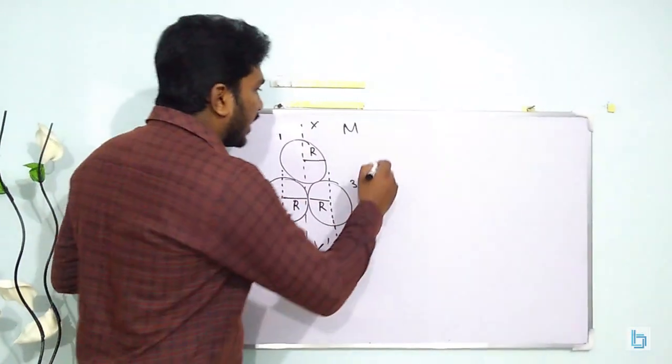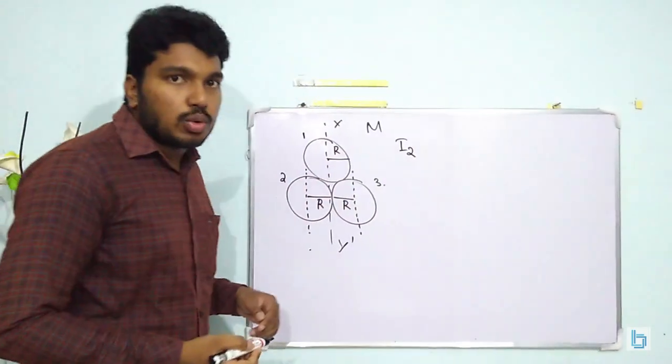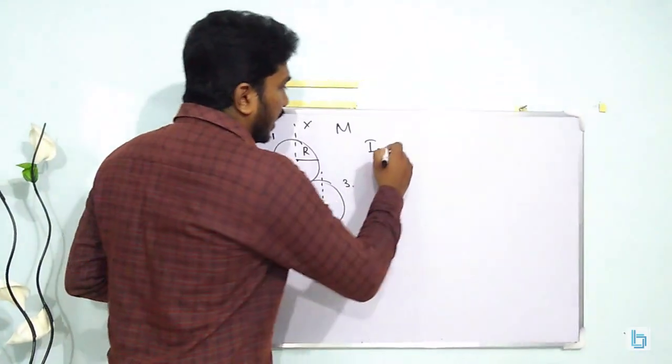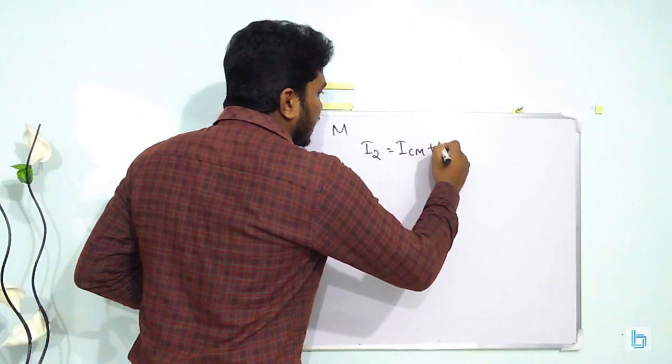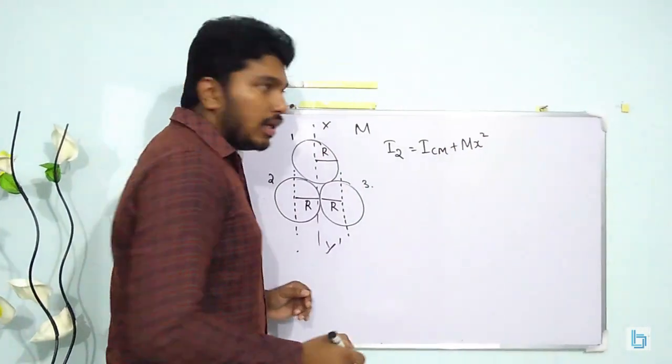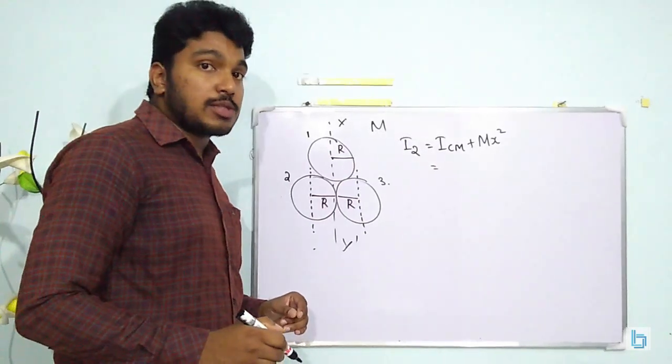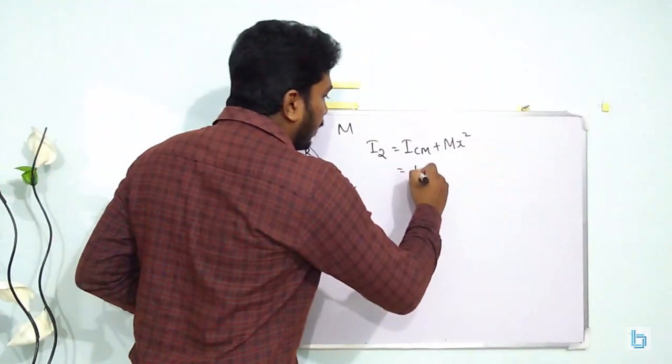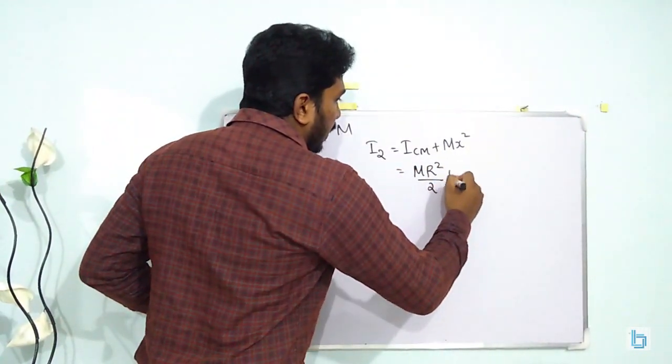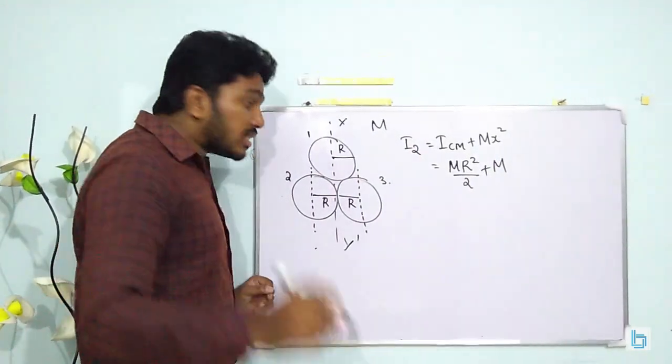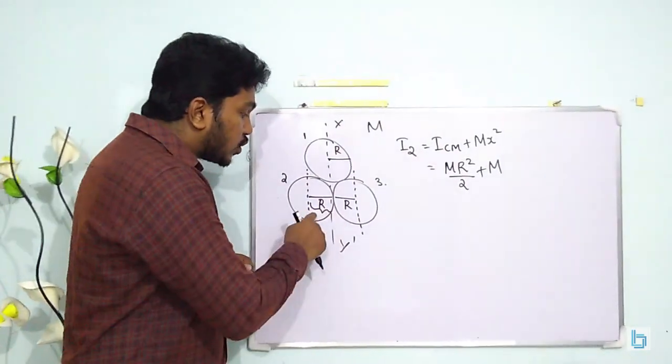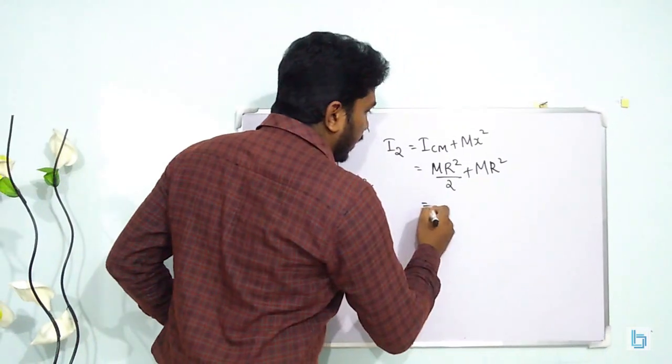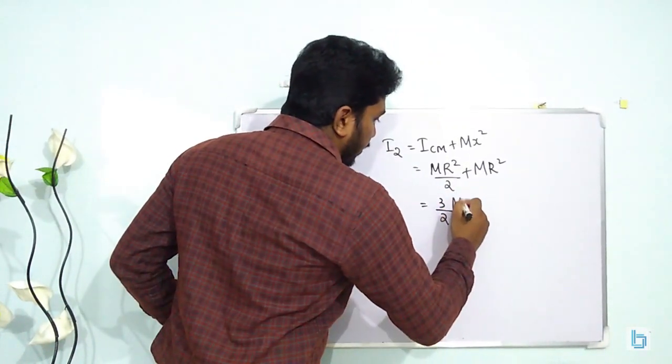So taking ring 2 into account, I can write the moment of inertia of ring 2 about the axis y y' will be equal to, by applying parallel axis theorem, we get I_cm plus mx square. I_cm means moment of inertia about an axis passing through the center of mass along the diameter, which is mr square by 2, plus m into x square. x is actually the perpendicular distance between these two parallel axes, and that is here r, so mr square. This will be 3 by 2 mr square.